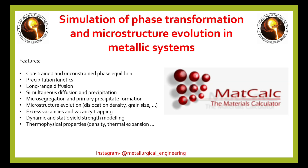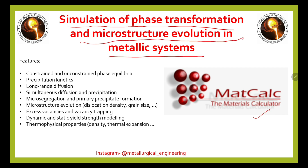There is another software known as MatCalc. MatCalc is used for simulation of phase transformation and microstructural evolution in metallic systems. Features include constrained and unconstrained phase equilibrium, precipitation kinetics, long-range diffusion, simultaneous diffusion and precipitation, micro-segregation, and microstructural evolution like dislocation density and grain size. You can use MatCalc for all these features.